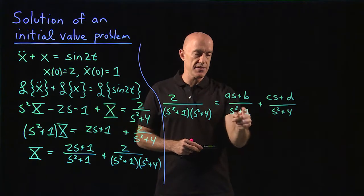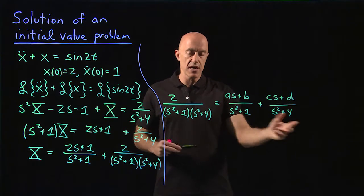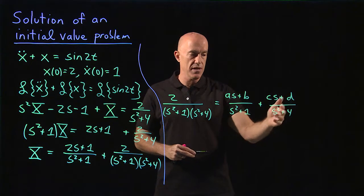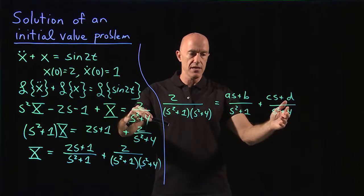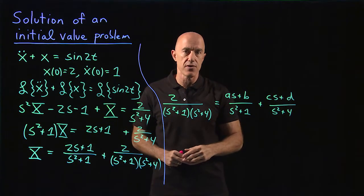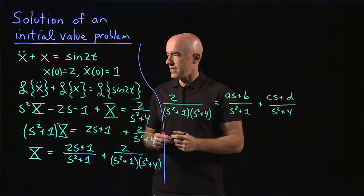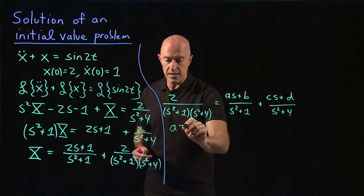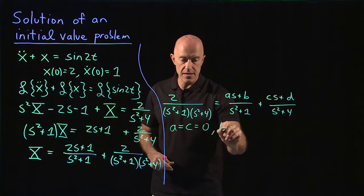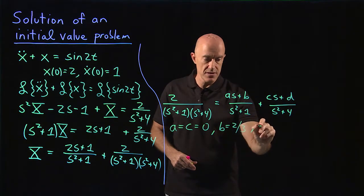You multiply the first term top and bottom by s squared plus 4, and the second term top and bottom by s squared plus 1. Then you set the s cubed, s squared, and s terms to 0, and set the constant term to 2. When you do that, you find A equals C equals 0, B is equal to 2 thirds, and D is equal to minus 2 thirds.